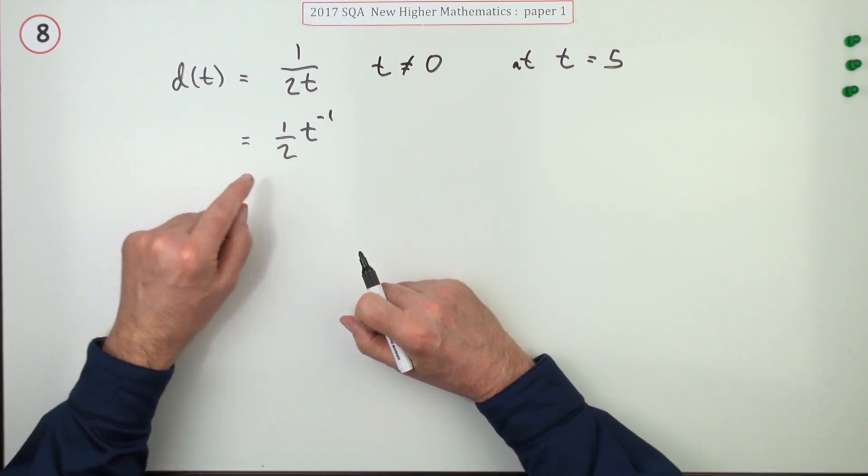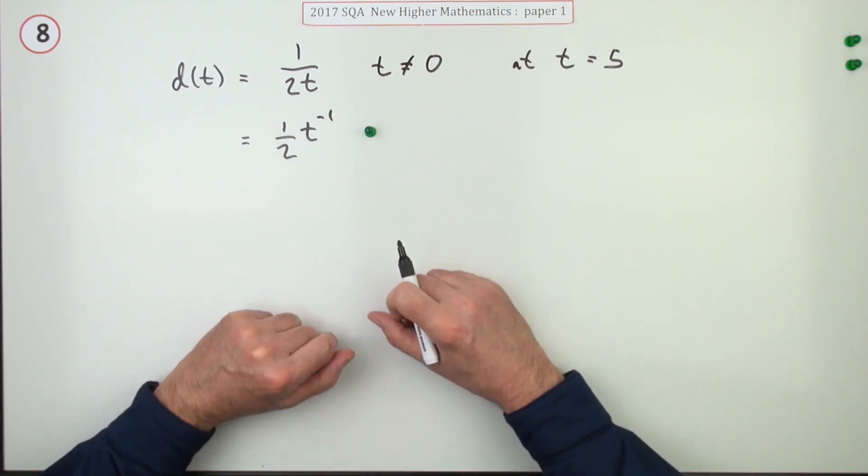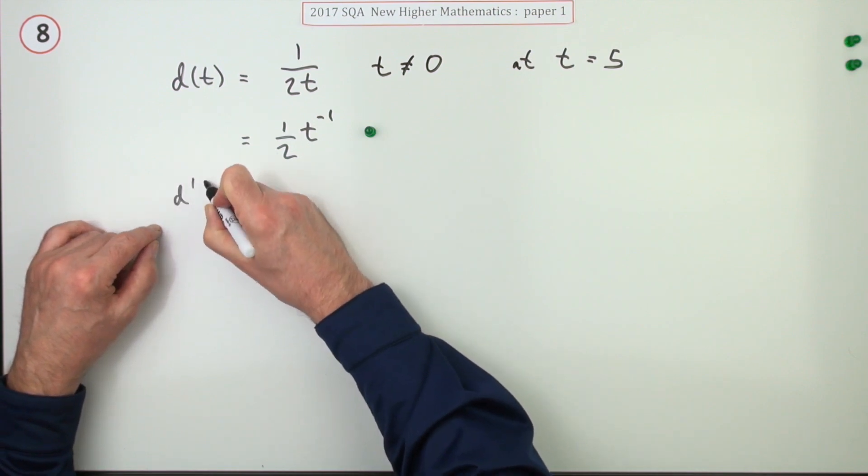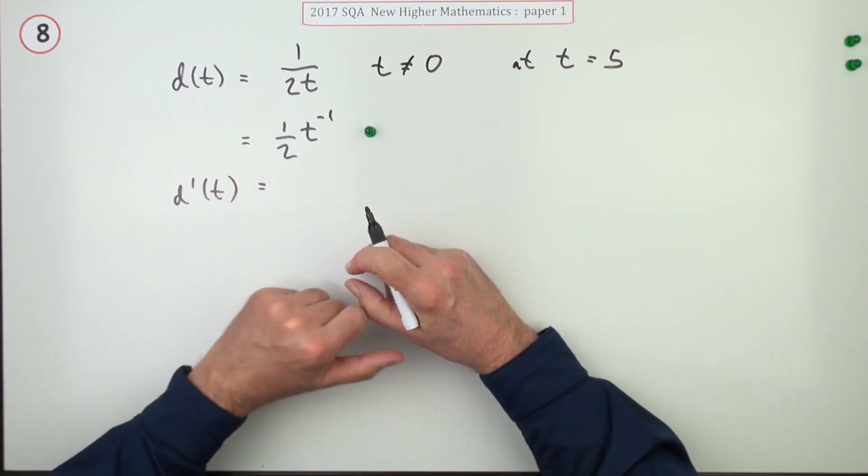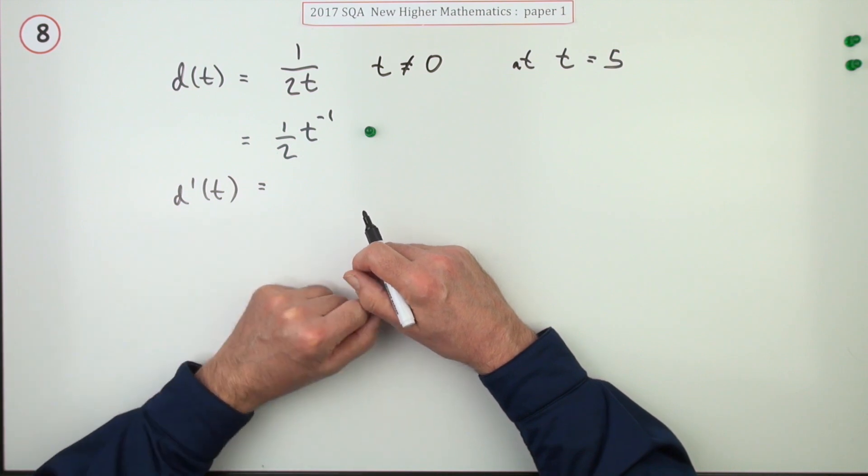And doing that gets the first mark. Now it's ready to go so you can differentiate it. Notice the correct terminology there - you're using d dash t.